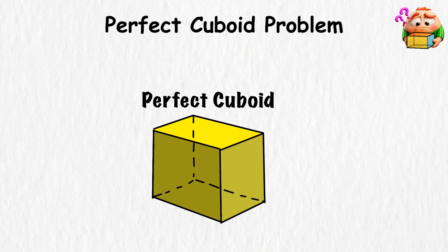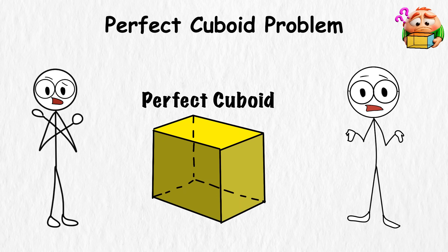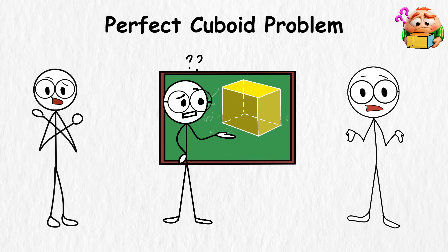Some experts think a perfect cuboid would have sides so huge that even today's fastest machines couldn't find it. Others think it simply doesn't exist at all. But until someone proves it, the question is stuck in limbo.